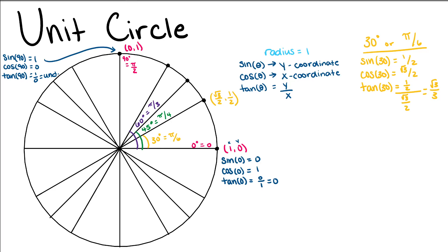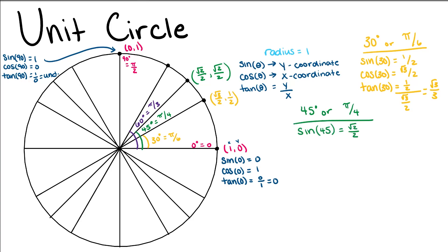Our next value is also given to us: (√2/2, √2/2). So this means the sine of 45 is √2/2, cosine of 45 is √2/2, and the tangent of 45 is (√2/2) over (√2/2), which is equal to 1.